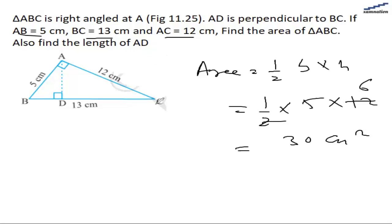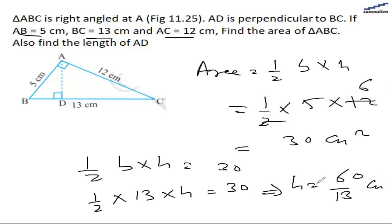We also need to find out the length of AD. Using the same formula for the area - half base multiplied by height equals 30 cm² - we take the length of AD as height and the base as BC. So half multiplied by 13 multiplied by height equals 30, which means the height will be 60 divided by 13 cm. This AD length will be 60 by 13 cm, and in terms of decimal that will come out to be 4.6 cm.